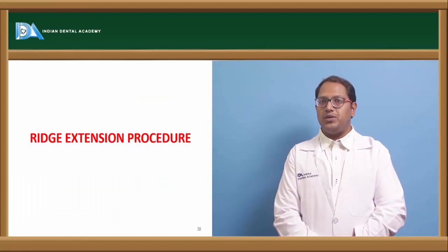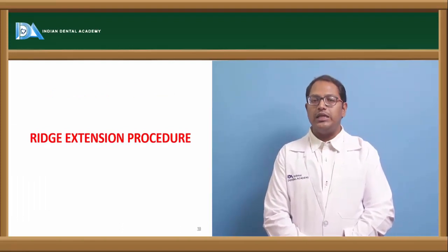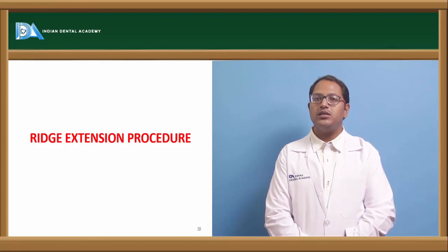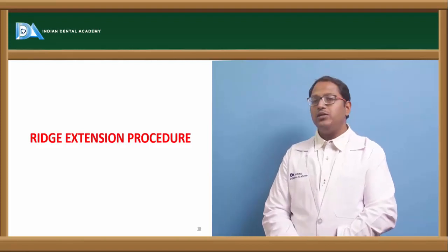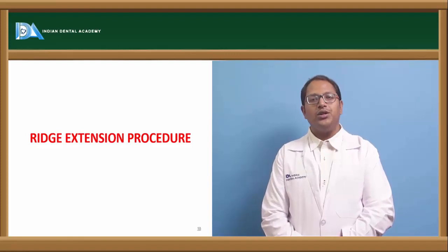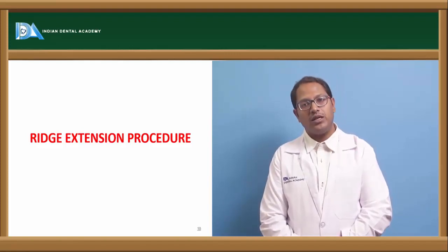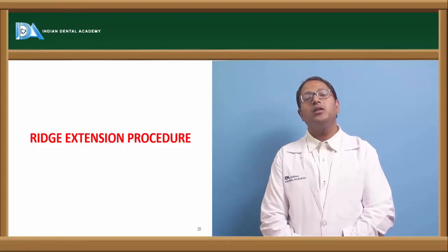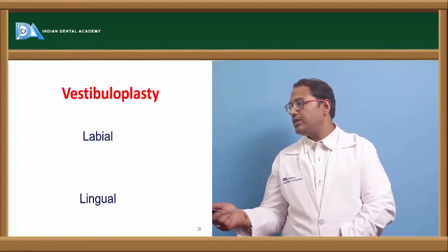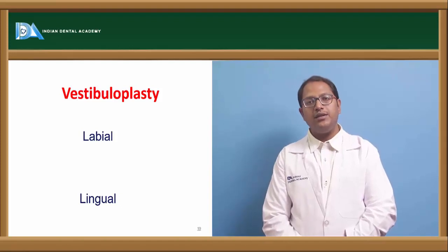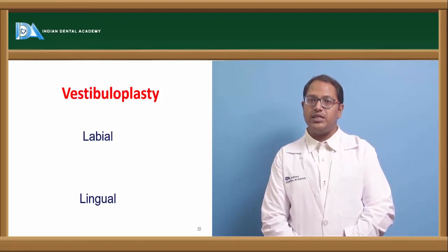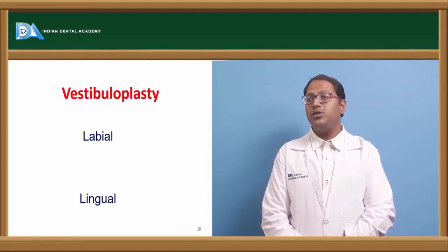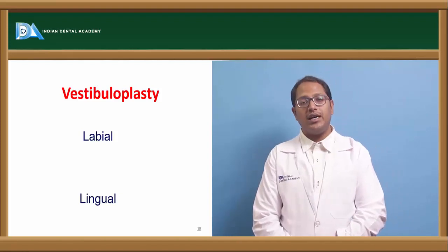Coming to ridge extension procedures. An old patient presenting with a very flat ridge is one of the most difficult things we encounter — there is insufficient ridge height or size. If the ridge is very flat, you have no option for a complete denture and not even for implant placement — so you need to extend the ridge. Extending the ridge can also be achieved with soft tissue procedures. By increasing the size of the vestibule through vestibuloplasty, we can gain sufficient ridge height again.